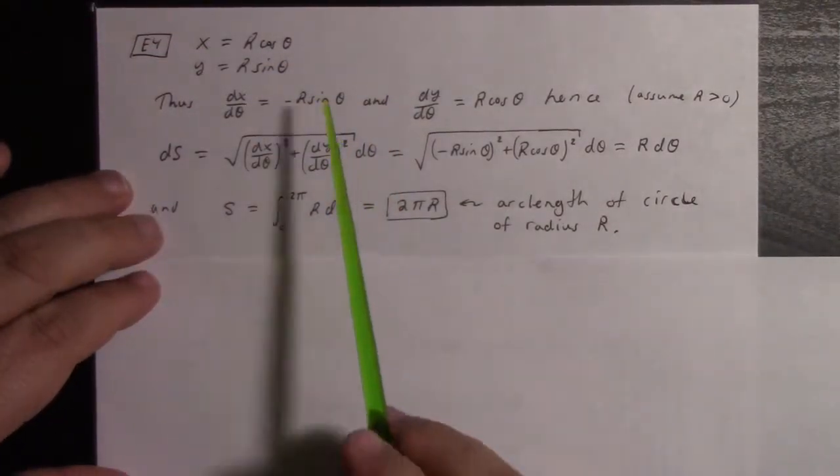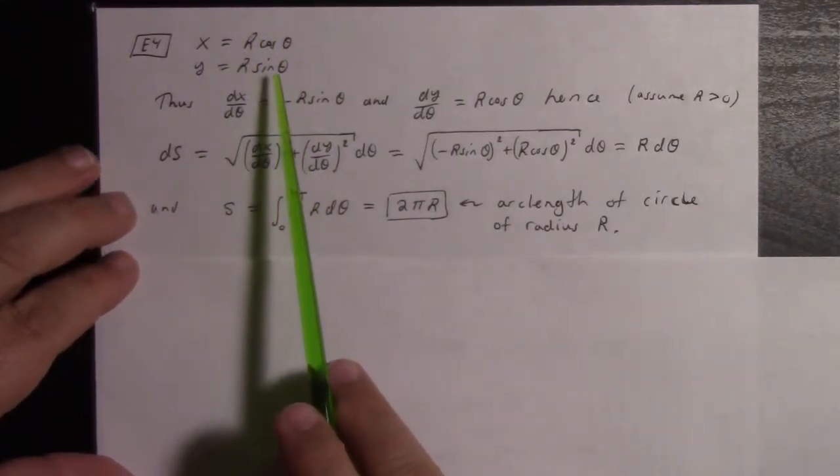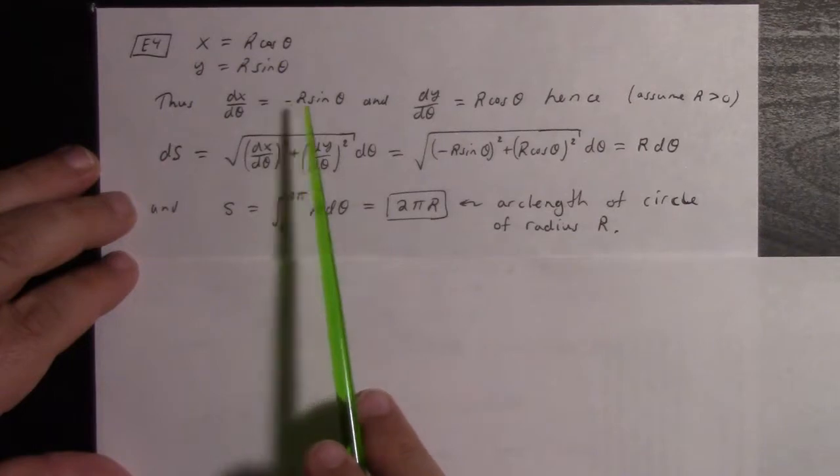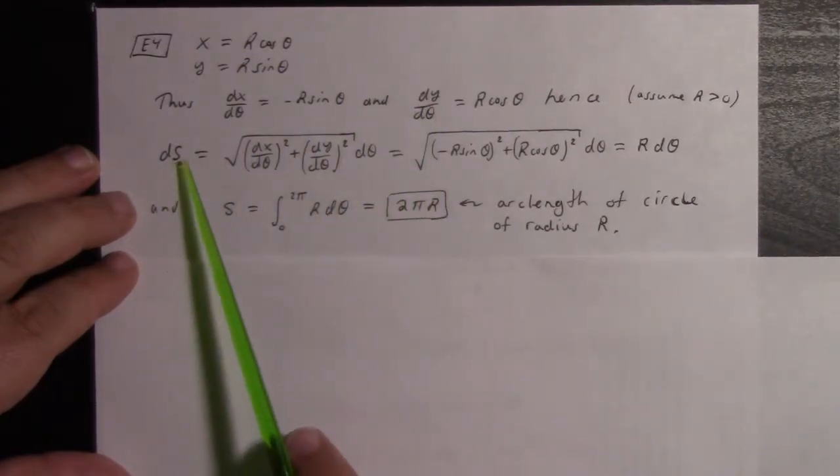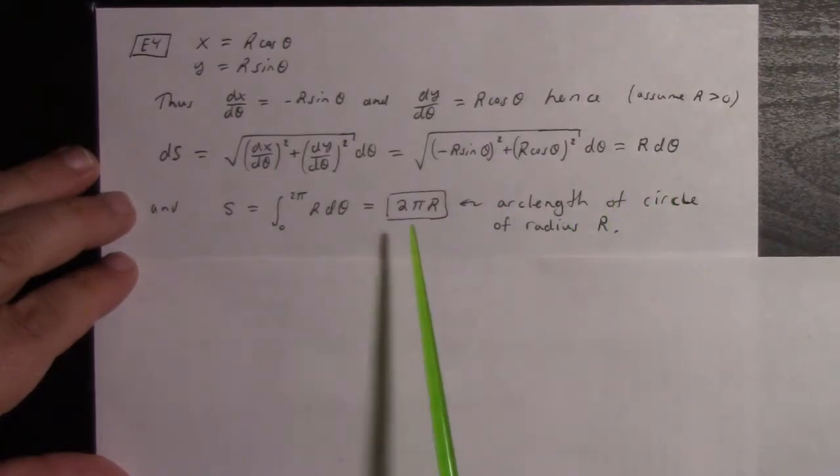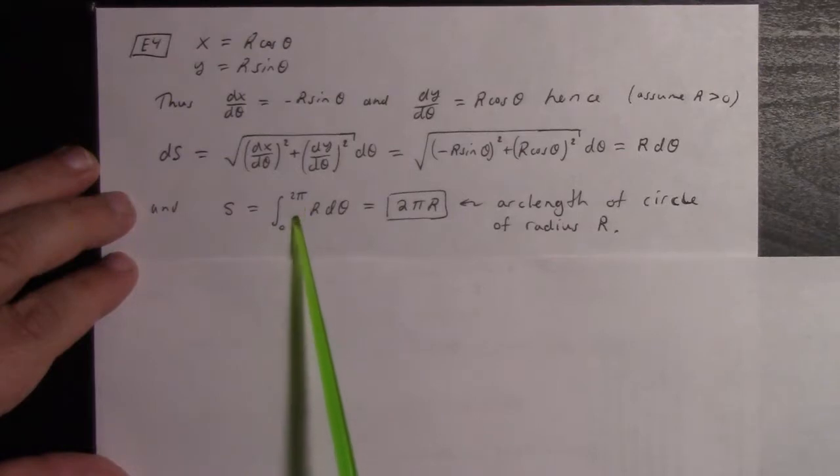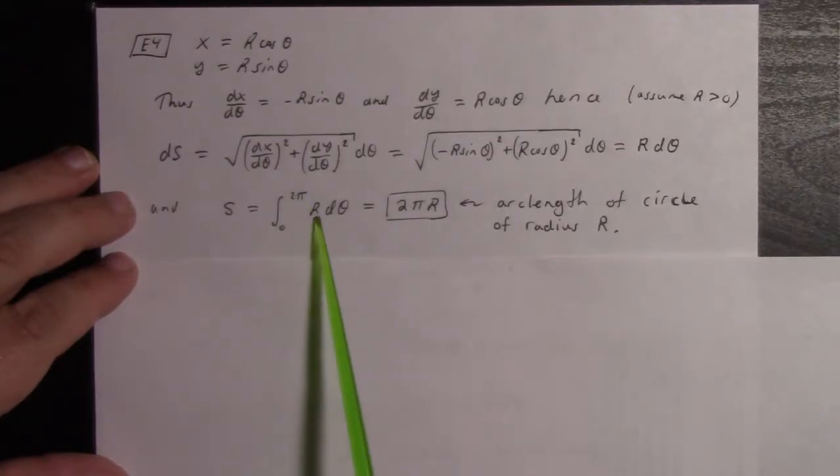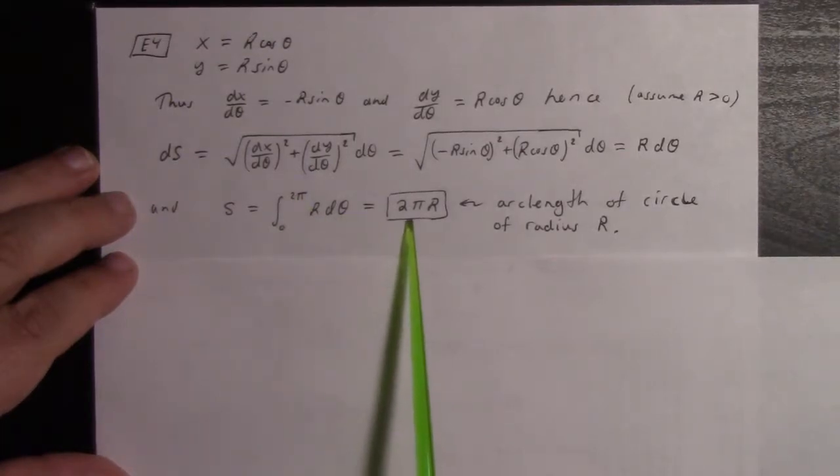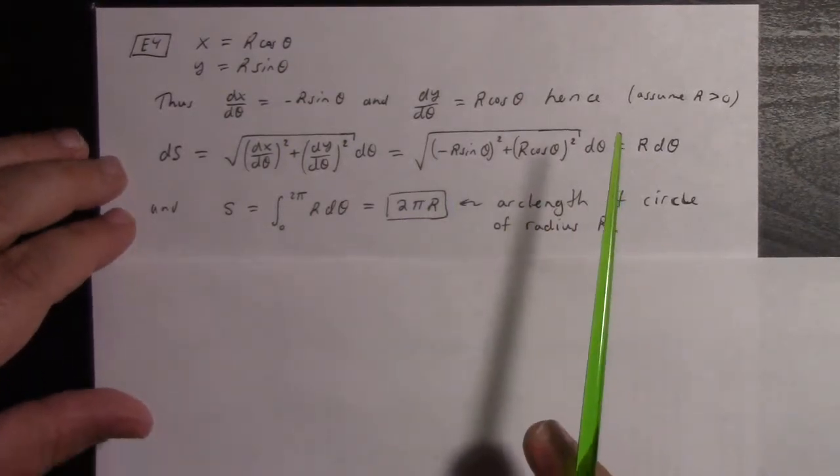I'll do the circle first. x = r cos(θ), y = r sin(θ) parametrizes a circle. You calculate dx/dθ and dy/dθ. That gives us ds, which works out to r dθ. To calculate the arc length of a circle, we have the integral of ds, which is the integral from 0 to 2π of r dθ, which gives us 2πr, the arc length of a circle, also known as the circumference.